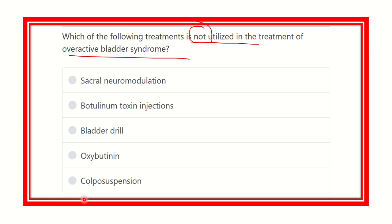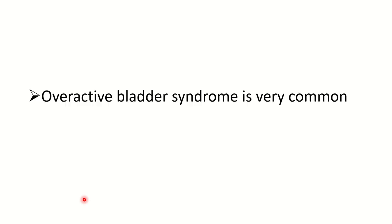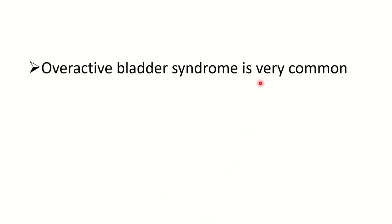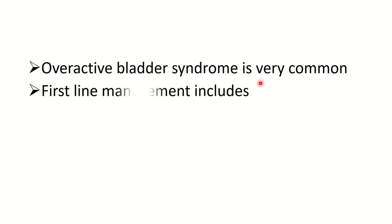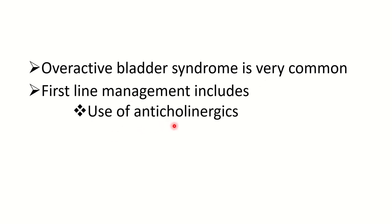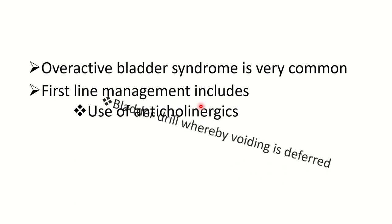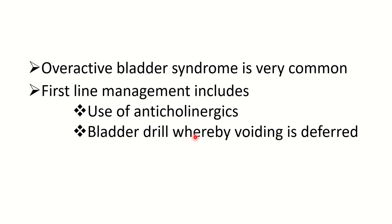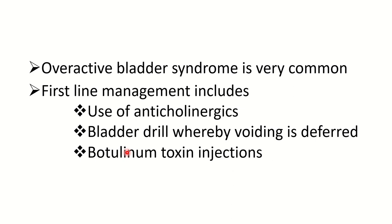Let's see some of the treatments of the overactive bladder. The first-line managements are use of anti-cholinergic agents, which prevent the action of cholinergic substances. Bladder drill, whereby voiding is deferred, may also be done. Botulinum toxin injection may also be given.